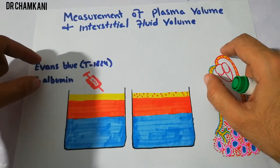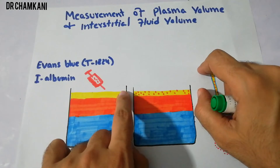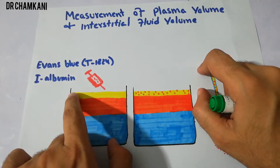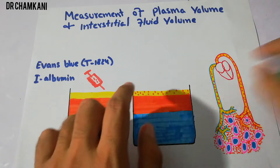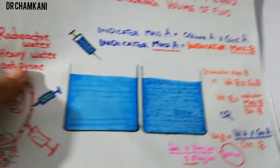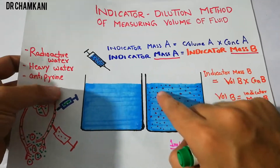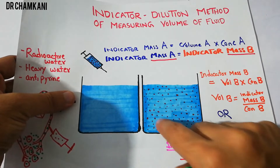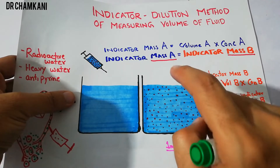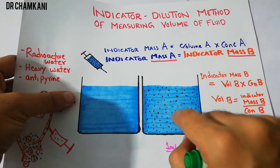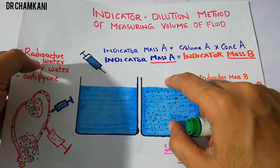These two indicators — radioactive iodine-labeled albumin and Evans blue — have the property to distribute only in the plasma when injected into the body. By contrast, radioactive water, heavy water, and antipyrene distributed into the total body water: extracellular fluid, intracellular fluid, plasma, and interstitial fluid.